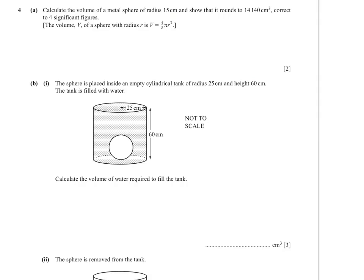Clearly a question about spheres and cylinders — we'll calculate volumes and surface areas. Calculate the volume of a metal sphere with radius 15 centimetres, and show that it rounds to 14,140 correct to four significant figures. They give you the formula: V = 4/3 × π × r³. Substituting r = 15: 4/3 × π × 15³. In the calculator: 4 ÷ 3 × π × 15³ equals 14,137.166... To four significant figures, the 3 rounds up to 4 because the next digit is 7 — giving 14,140. Shown.